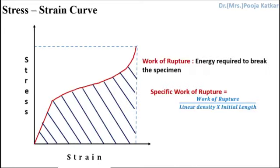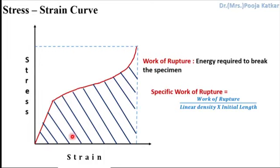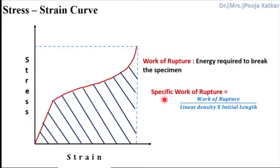The next important information from a load-elongation curve is work of rupture — for a stress-strain curve, this is called specific work of rupture. Work of rupture is defined as the energy required to break the sample; it denotes toughness of the material, and it can be measured by measuring the area under the curve. A higher area under the curve indicates a tougher material. To compare toughness of different materials, we use specific work of rupture, which includes linear density and initial length, so different materials can be compared for their toughness.